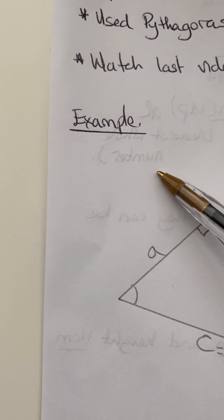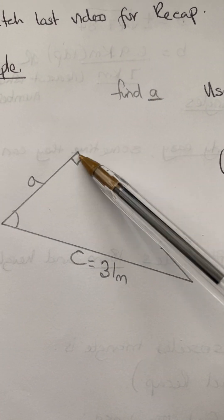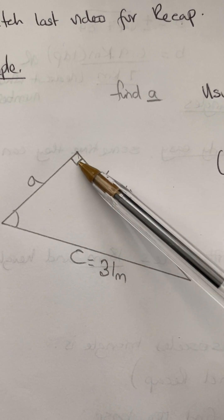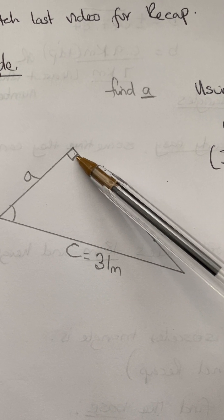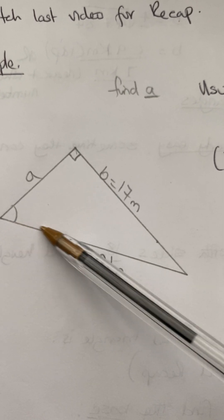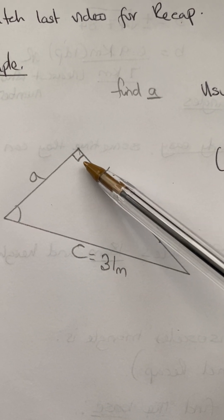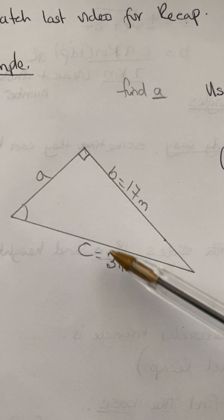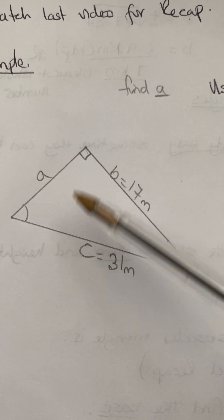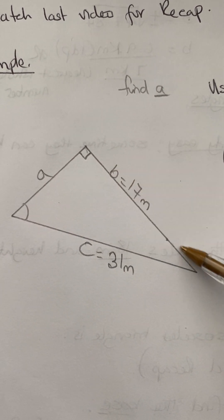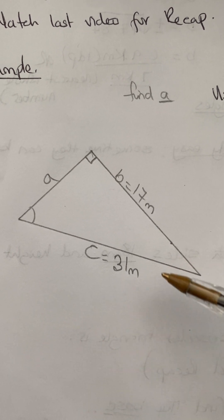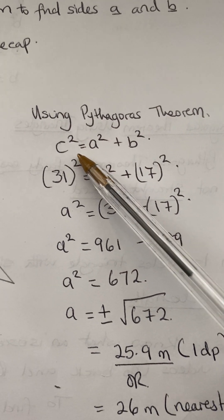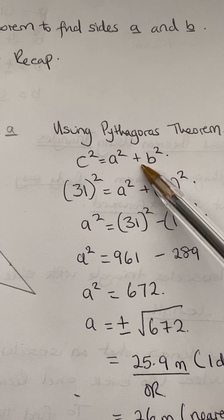I have an example here. There's always a right-angle triangle involved when you are using Pythagoras' theorem. The side opposite to the right angle — which is 90 degrees — is the hypotenuse, and that is C. Then you have A and B. We've been using the formula: C squared equals A squared plus B squared.